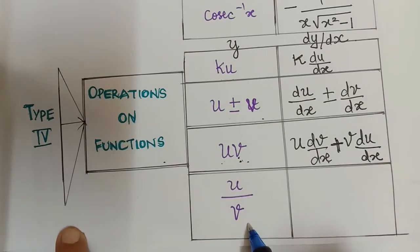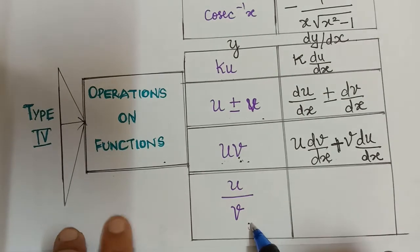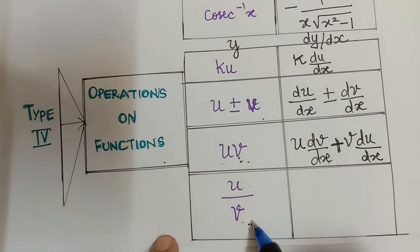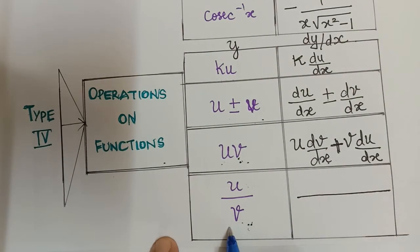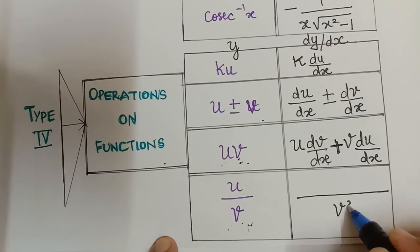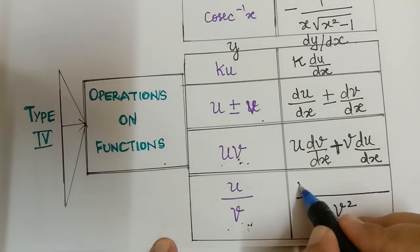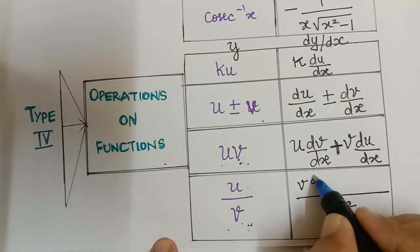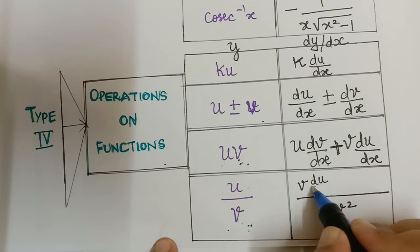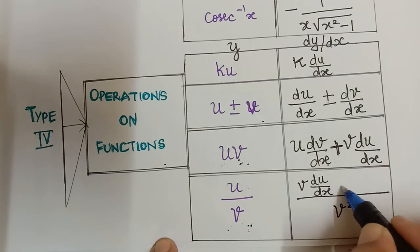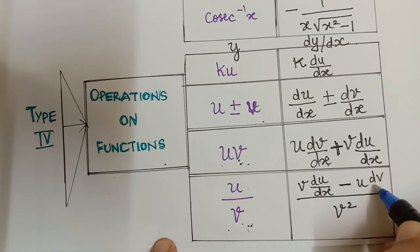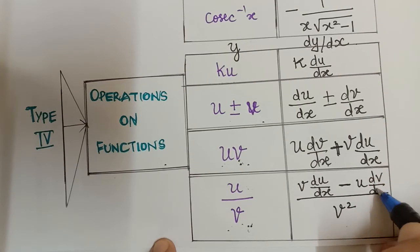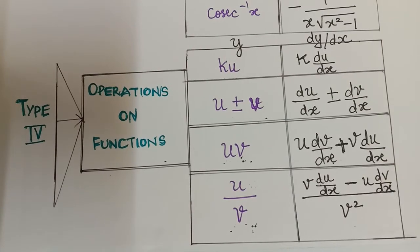Finally we have the division operation — u divided by v. The formula: write the denominator squared, v², as the denominator of the result. In the numerator, first keep v as it is and differentiate u to get du/dx, then subtract u as it is times dv/dx. So the result is [v·(du/dx) − u·(dv/dx)] / v². Hope you have understood all four types.